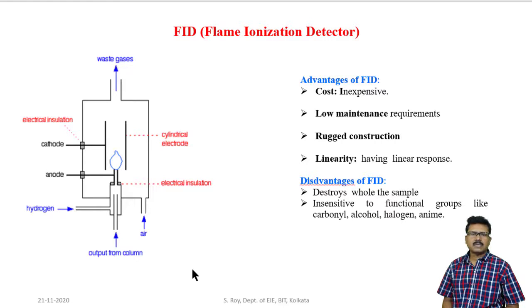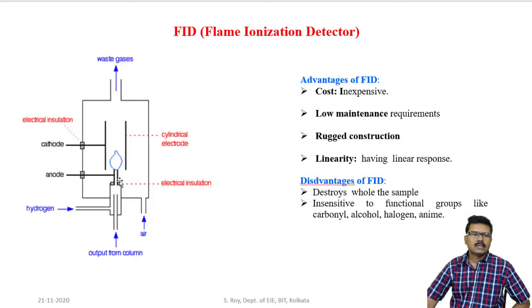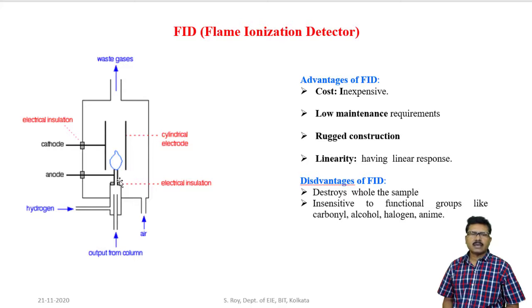Flame ionization detector is inexpensive to operate and acquire, with low maintenance requirement apart from cleaning and replacing the jet. Regarding construction, it is rugged and relatively resistant to misuse, and it gives linear output. The main disadvantage is that it destroys the whole sample — all the sample coming from the column is destroyed by the flame — so if we want to send the product to a mass spectrometer for further analysis, we can never use flame ionization detector.